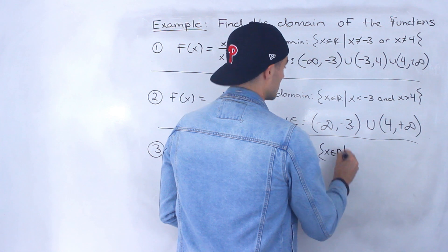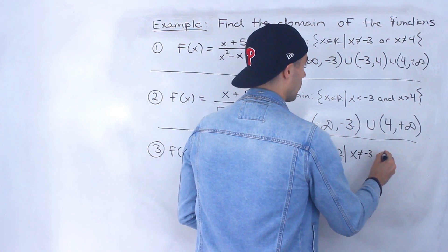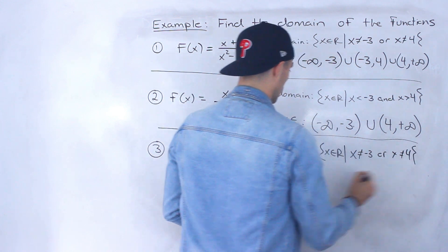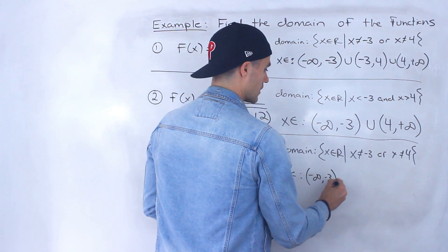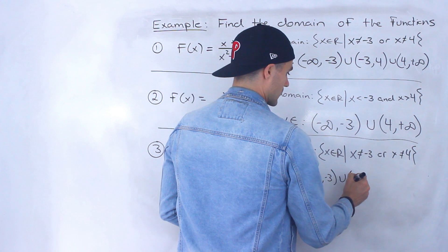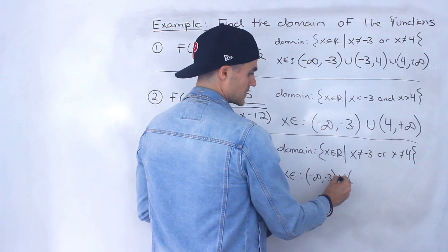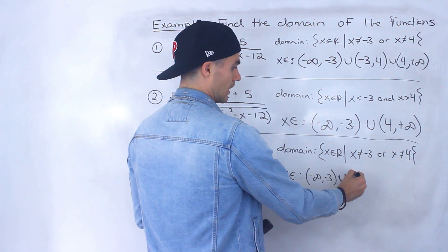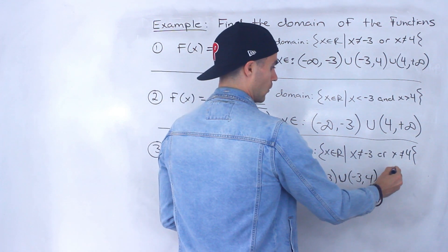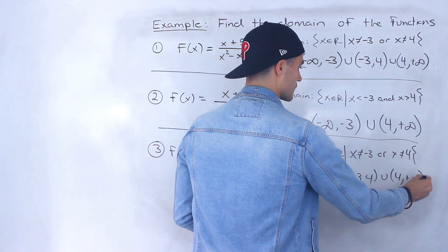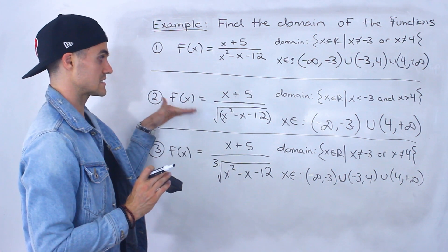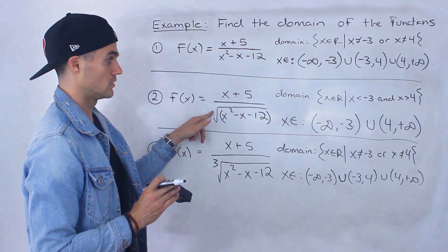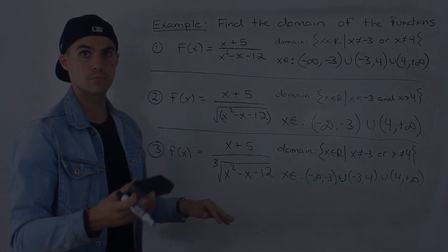So the domain for the third root function is x cannot equal negative 3 and x cannot equal 4. In interval notation: negative infinity to negative 3, union negative 3 to 4, union 4 to positive infinity — exactly the same as number one. The most restrictive domain was the second function, because it had an even root, so the expression under the square root had to be strictly positive.